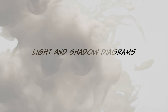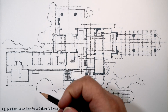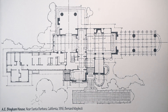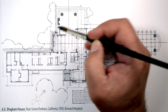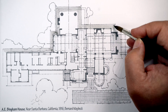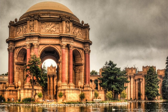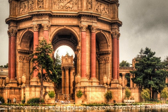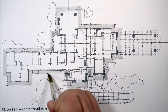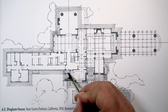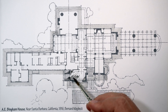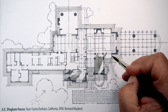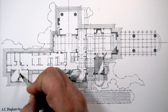Light and Shadow Diagrams. The work of Bernard Maybeck, also an American architect, also shows the design of architecture using light and shadow. His Palace of Fine Arts in San Francisco is perhaps his most famous work. Architects design for light and shadow through a series of drawings or diagrams. Often these are not realistic renderings, but just light and shadow studies.